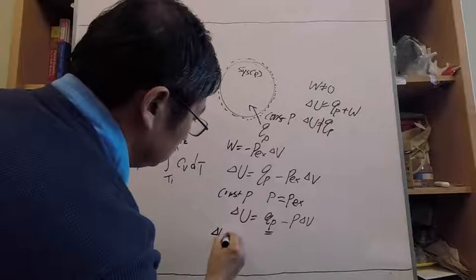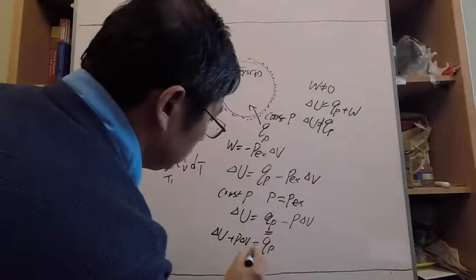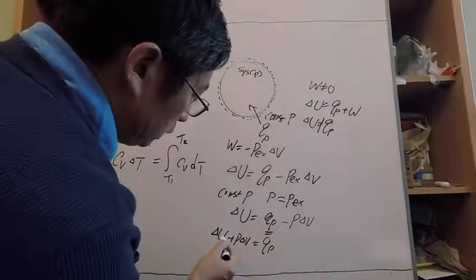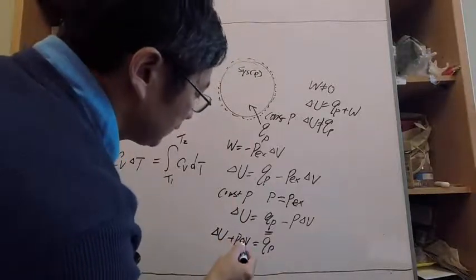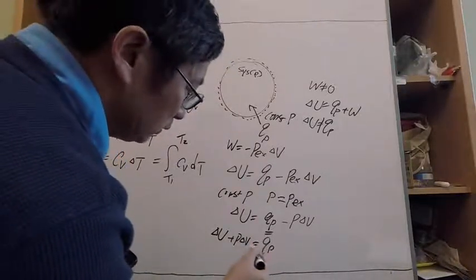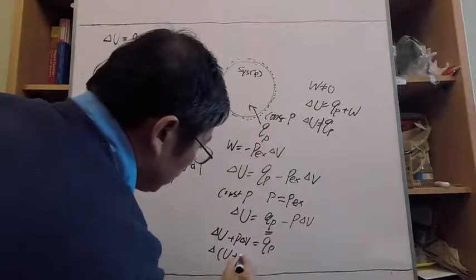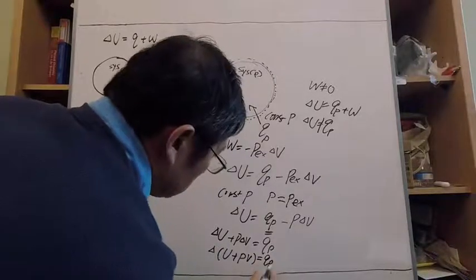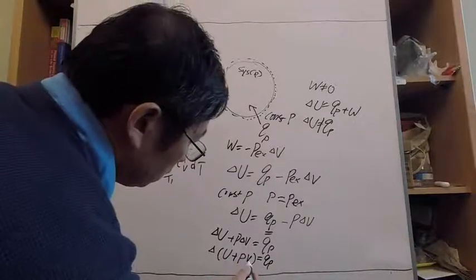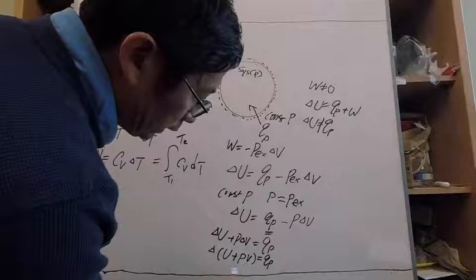Rearranging, we get delta U plus P·delta V equals Q_P. The heat transferred to the system at constant pressure is not equal to internal energy alone, but relates to internal energy plus another aspect of the state. Since pressure is constant, we can write this as the change of the quantity (U + PV) equals Q_P. Both internal energy and PV are state functions, so their combination is also a state function.